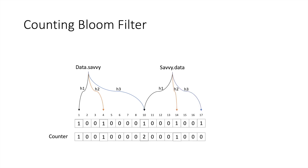Similarly for h2 and h3, we increase their respective counters. Now if we want to delete savvy.data from the bloom filter, for whatever bits it was pointing to, we decrease the counter and reset the bits. Bit 17 changes to 0 and its counter decreases by 1. Bit 14 changes to 0 and its counter decreases by 1. For bit 10, the counter decreases by 1, but bit 10 is NOT set to 0 because the counter value was more than 1. This way we can delete a record from the bloom filter without corrupting it.